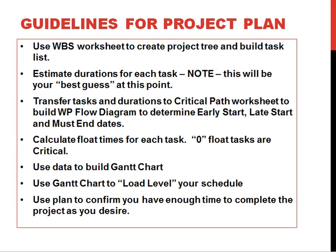Once that's put together, transfer those tasks and durations to the critical path worksheet and build a work path flow diagram to calculate early start, late start, and must-end dates for each task. From there, calculate the float times — anything receiving a zero float time result will be tagged as a critical path item. This data will then be used to build the Gantt chart, load level the schedule, and confirm whether we have enough calendar time to complete the project.